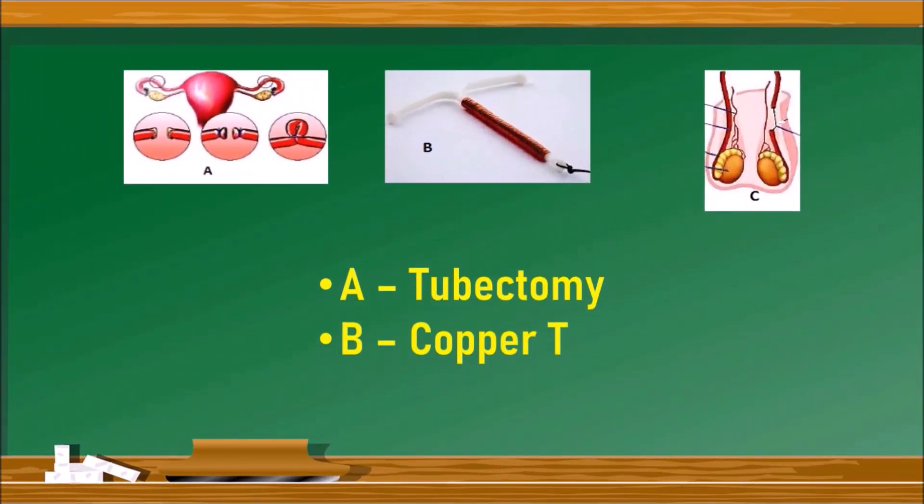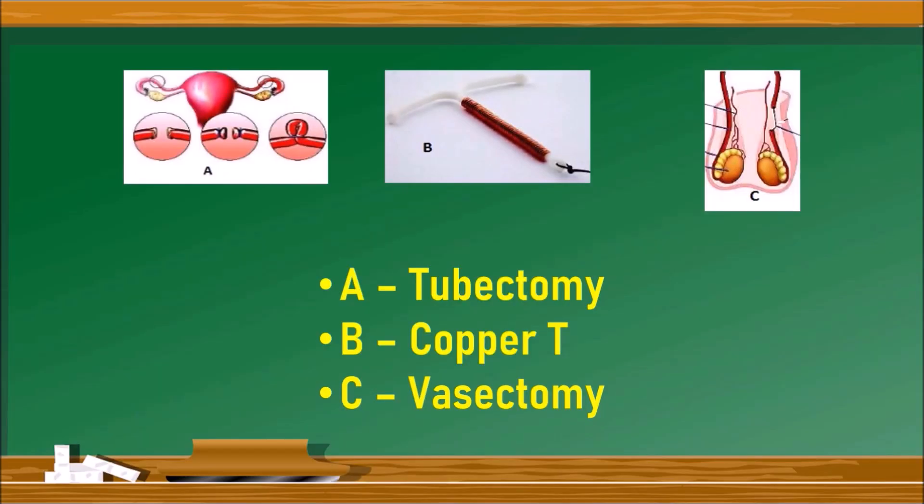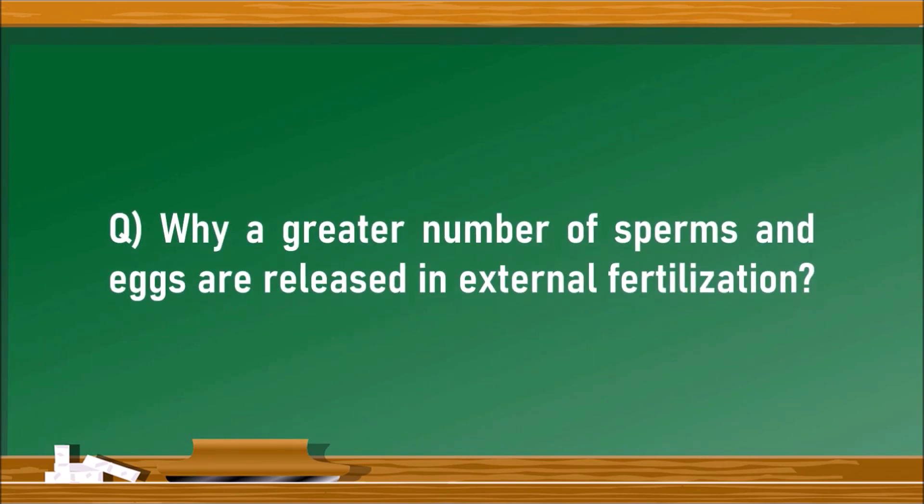A is a tubectomy. B is copper-T. And C is vasectomy. These are the family planning methods among which tubectomy and copper-T are taken over in females, whereas vasectomy is done for males.